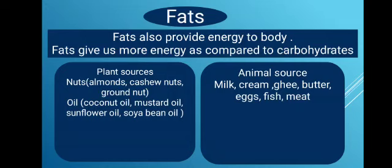Fats are mainly obtained from two sources: plant sources and animal sources. From plant sources we get fat from almonds, cashews, groundnuts, and from oils like coconut oil, mustard oil, sunflower oil, and soybean oil. From animal sources we get fat from milk, cream, ghee, butter, egg, fish, meat, etc.